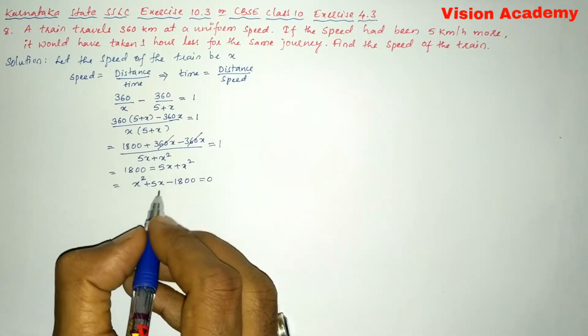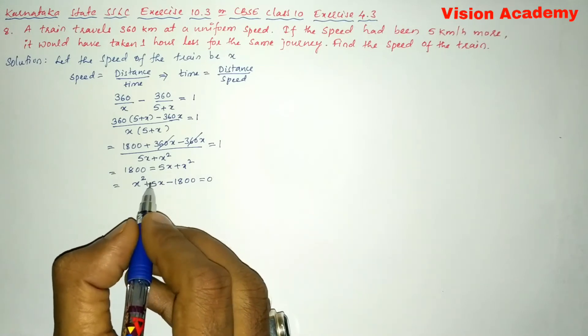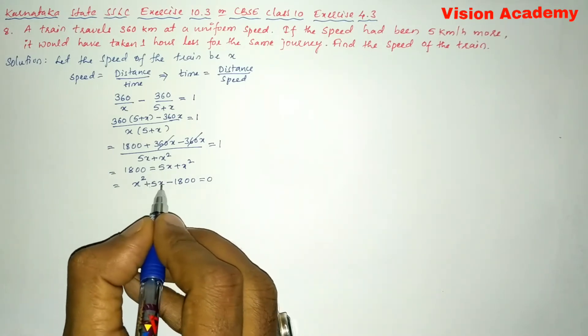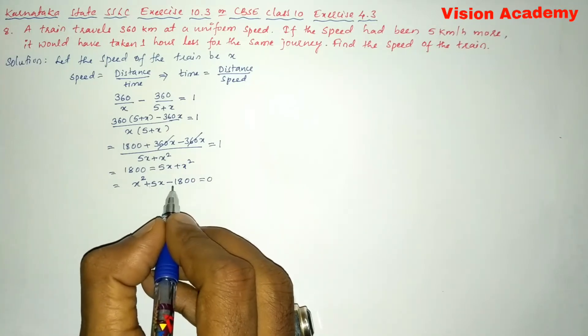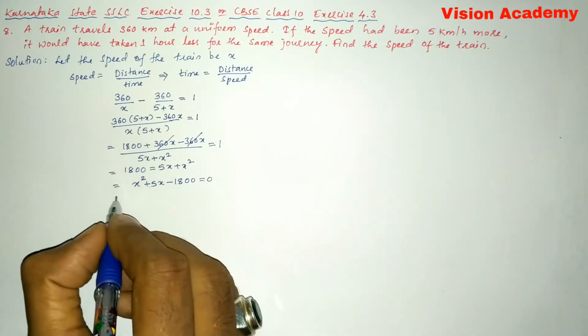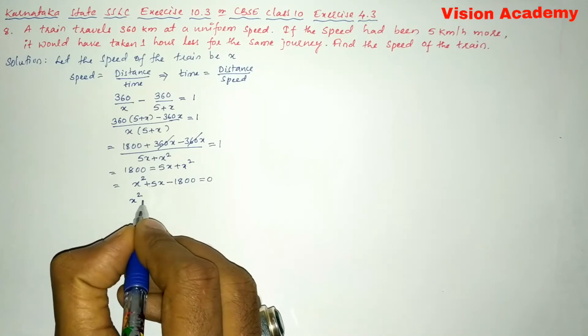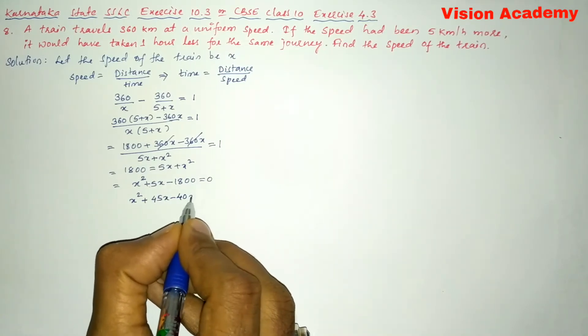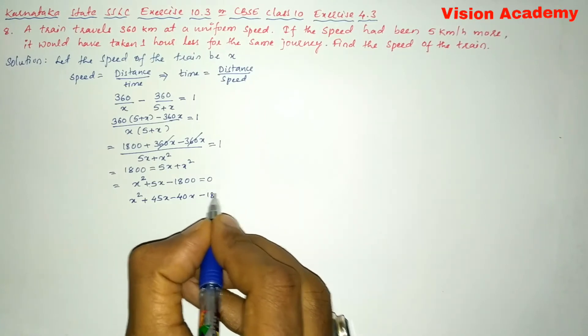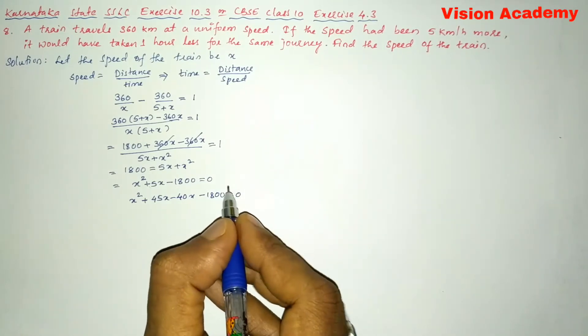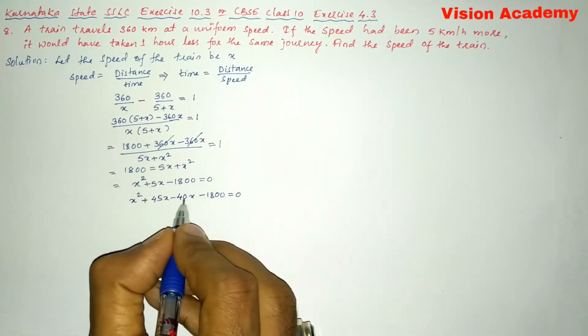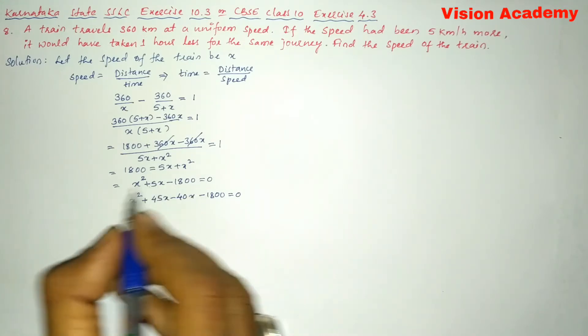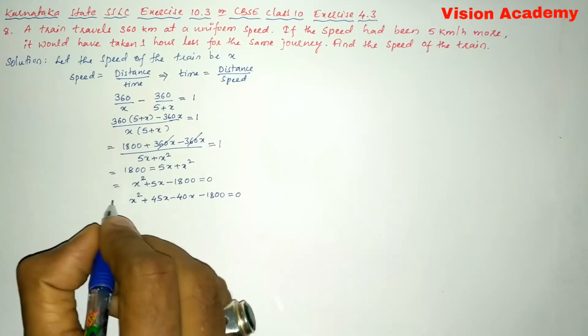So now we have to split this middle term in such a way that if I add two numbers, I must get plus 5 and if I multiply the same two numbers, I must get minus 1800. So here I'm going to write x square plus 45x minus 40x minus 1800 is equal to 0. Now you can see 45 minus 40 is 5, 45 times 40 is 1800.